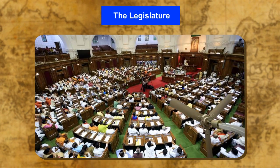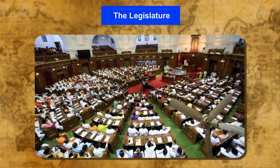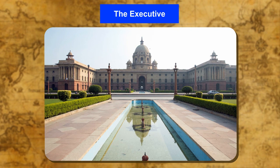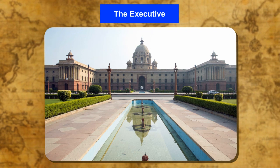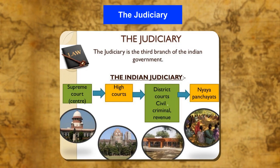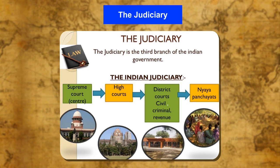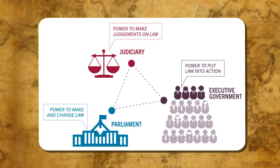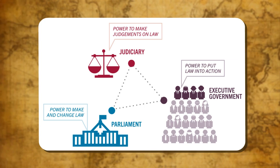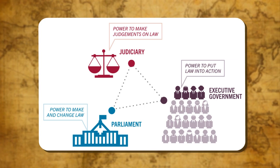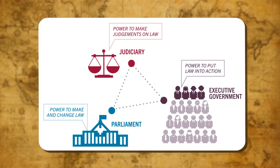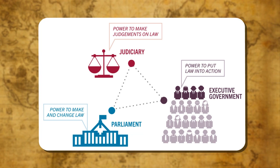The legislature passes laws. The executive puts laws into effect. The judiciary makes sure that laws are enforced properly. All the organs of the government should try to establish a society or proper order where all-round development of all individuals is possible.